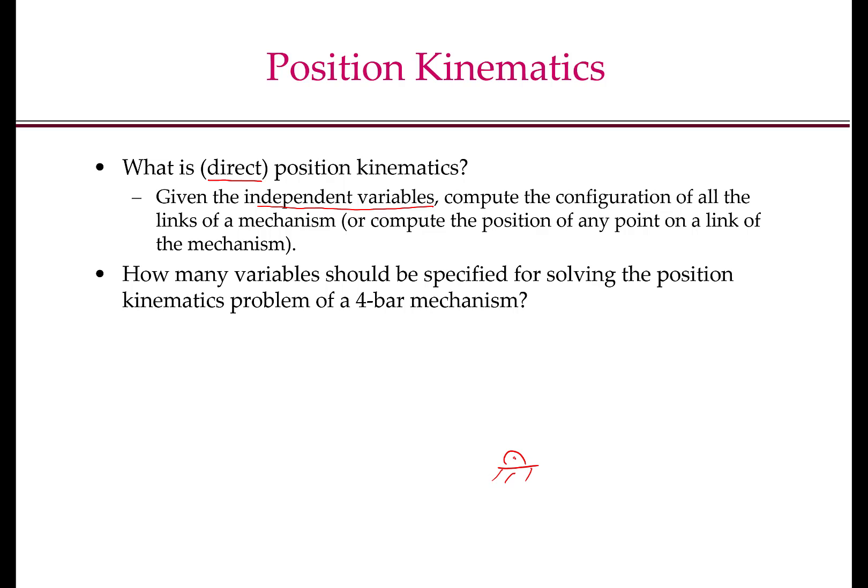A four-bar mechanism has three moving bodies and one fixed body, which is the ground. Between each pair of moving bodies there is a revolute joint allowing one degree of freedom motion. We used Grübler's criteria to find the degrees of freedom of a mechanism, and we know that the degree of freedom of a four-bar mechanism is one. That means the number of independent variables we need to specify for the four-bar mechanism is one. If we specify this variable, we can compute the position of any point on any link of the mechanism.